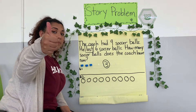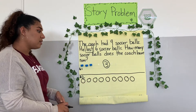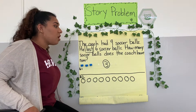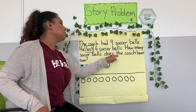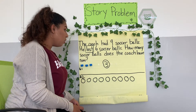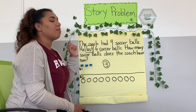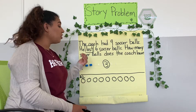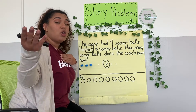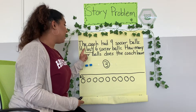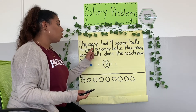Are my circles the same size? Give me a thumbs up. Are they neat? And did I use the end of the paper to the end? Yes, I still have some space left over. So let's go ahead and see how we're going to solve the problem. He lost six soccer balls. We talked about this when we were using the cubes — when you lose something, it's gone, you do not have it. So he lost six soccer balls. What we need to do is cross out the circles to show the six soccer balls are gone.